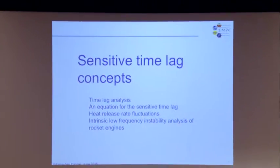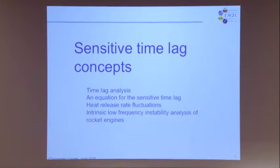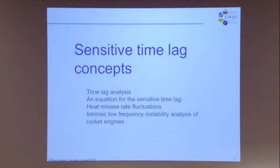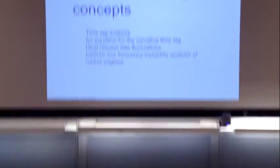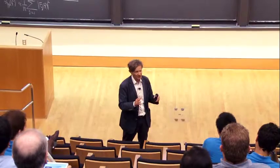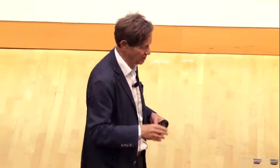There is much more in the literature if you want to work with that theory, but this is just an introduction. We want to see how we introduce this time lag, and then we give an equation for the sensitive time lag — it is called sensitive because the time lag itself depends on the parameters of the system. Then we will relate that to heat release rate fluctuations and analyze one case: the intrinsic instabilities of rocket engines. This is the simplest case to look at, but you can study more complicated situations with that theory as well.